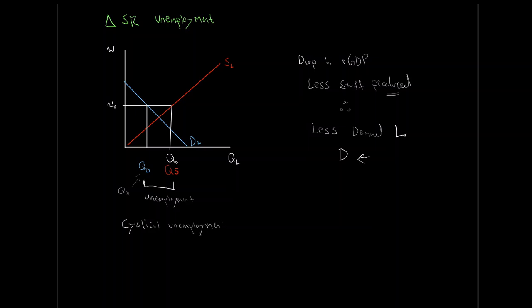Cyclical unemployment is unemployment caused by or due to the cycles in real GDP. We already talked about this idea of the business cycle — that real GDP expands, it contracts, it goes around this idea of potential GDP. We introduced that concept and said keep it in your back pocket for now. This idea of cyclical unemployment is the effect of unemployment due to this drop in GDP.